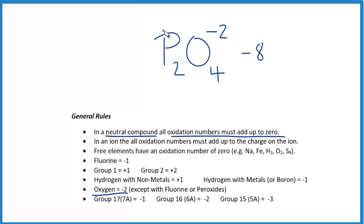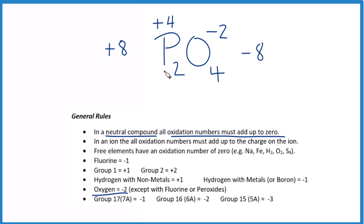For phosphorus, we don't know what that is, but we do know it needs to add up to positive eight so that they cancel out and we have a neutral compound. Two times some number gives us positive eight — two times positive four gives positive eight. So the oxidation number for each phosphorus in P2O4 is plus four.